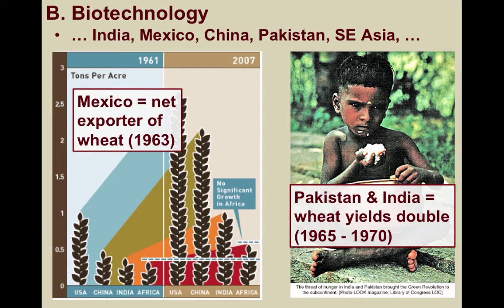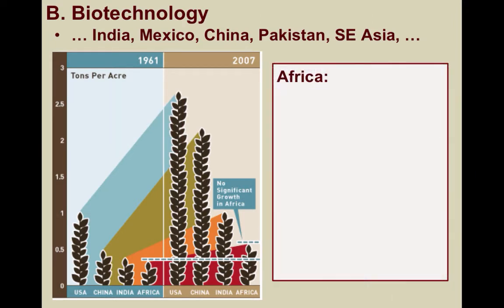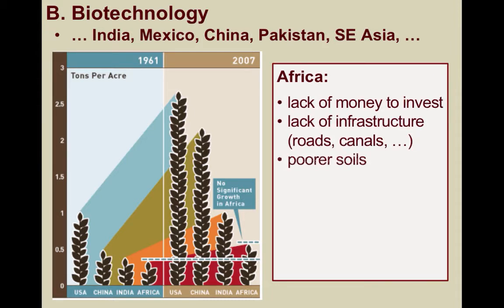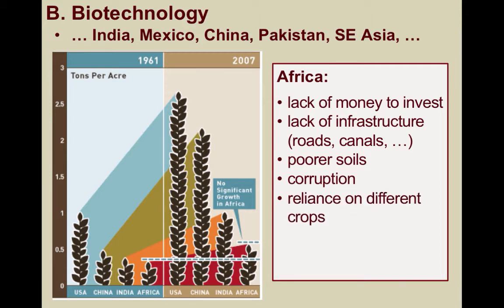However, the Green Revolution has had minimal impact in Africa. A lack of money and infrastructure, poorer soils, corruption, a reliance on many different crops, as well as a lack of availability of water for irrigation in many villages has made it difficult for many farmers on the continent to improve their crop yields and, in effect, their lives to the same extent.